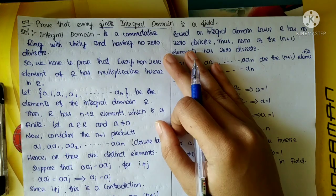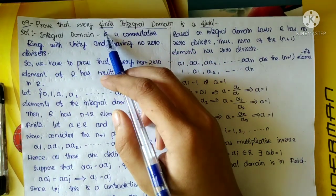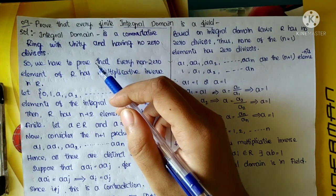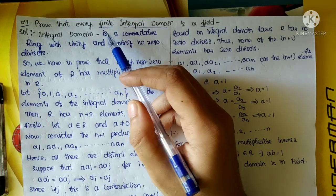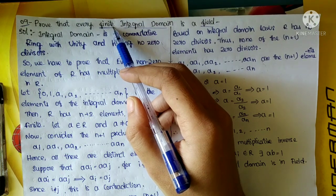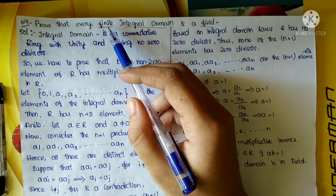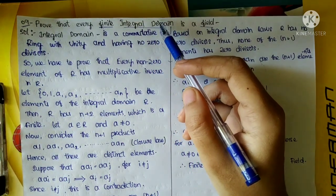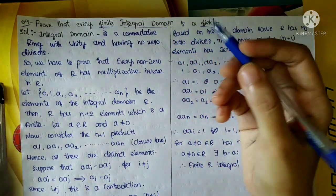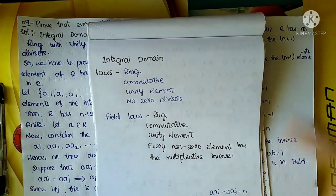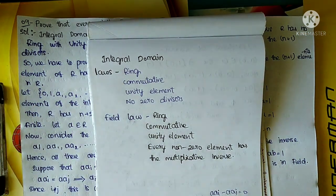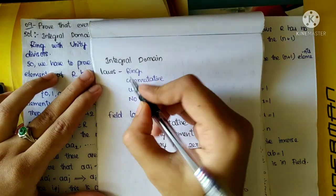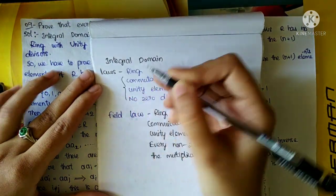Three things: first is finite. Finite means countable — any 10, 15, 20 countable elements are finite, and uncountable is infinite. So here we have integral domain, and integral domain has four laws: first, it should be a ring; commutative; unity element; no zero divisors. All these four are the integral domain laws.